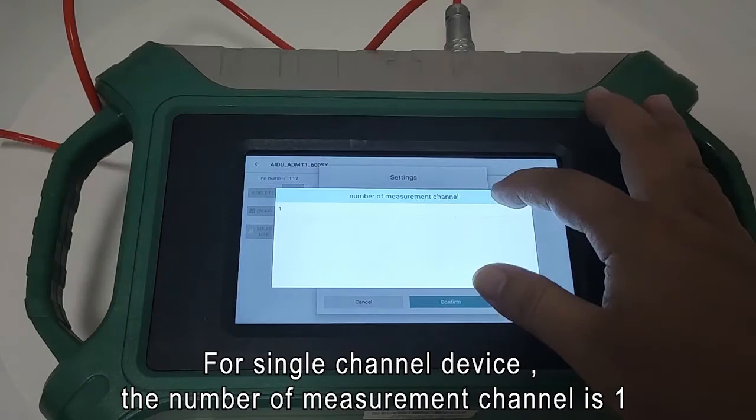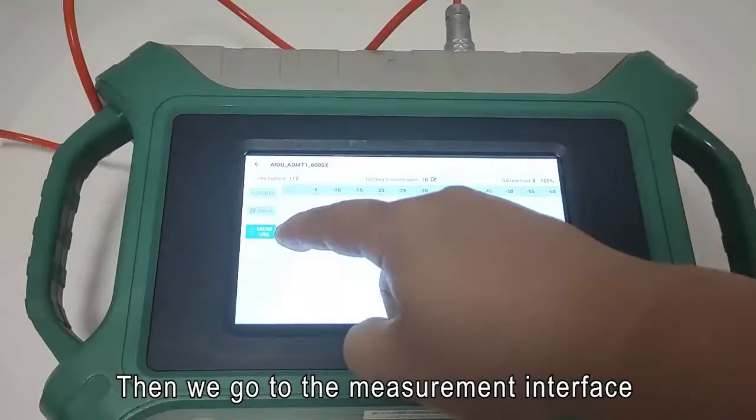For single channel device, the number of measurement channel is 1. Then confirm the setting.